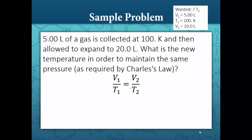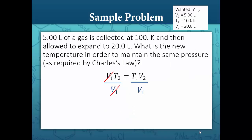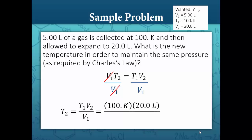First, let's cross multiply. This gives us V1 times T2 is equal to T1 times V2. To isolate the variable T2, we divide each side by V1. V1 cancels out on the left-hand side, and our equation becomes T2 is equal to T1 times V2 over V1. Plugging in our values: the initial temperature is 100 Kelvin, times the final volume of 20 liters, divided by the initial volume of 5 liters. The units liters cancel out and we're left with 400 Kelvin.